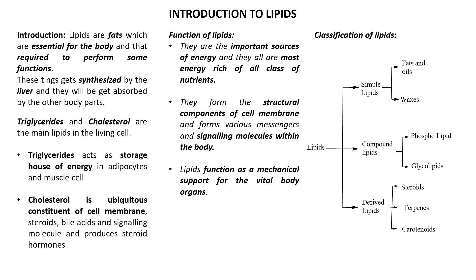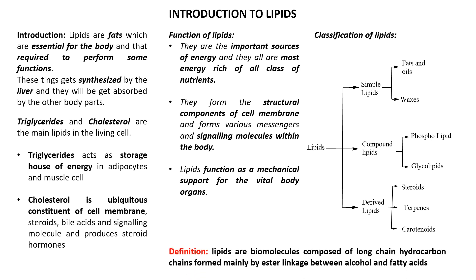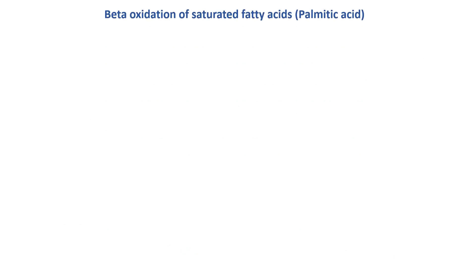Under derived lipids, we get three types: steroids, terpenoids, and carotenoids. Steroids include C27, C28, and C29 steroids. An example for terpenoids is triterpenoids, and examples for carotenoids include lycopene and carotenes. Generally, lipids are defined as biomolecules composed of long chains of hydrocarbon chains formed mainly by ester linkage between alcohols and fatty acids.